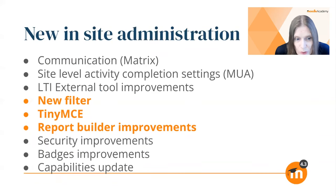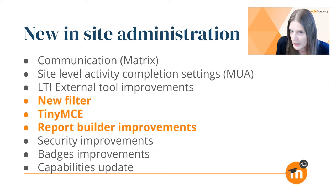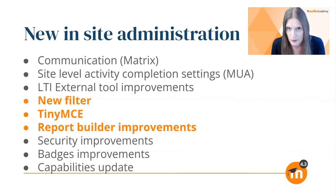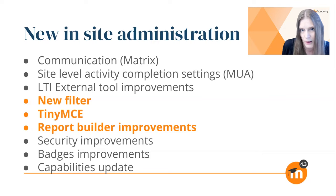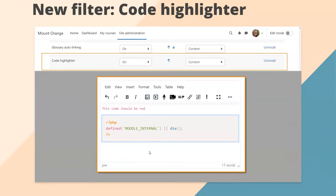We're now going to look at a new filter you can enable, improvements to TinyMCE — which is now the default editor and will completely replace the previous Atto editor — and improvements to Report Builder for creating custom reports. In Site Administration > Plugins > Filters, if you enable the new filter called Code Highlighter, it will colour-code code, making it easier for people to read. This is separate from another feature new in TinyMCE, but both allow easier viewing and managing of code.